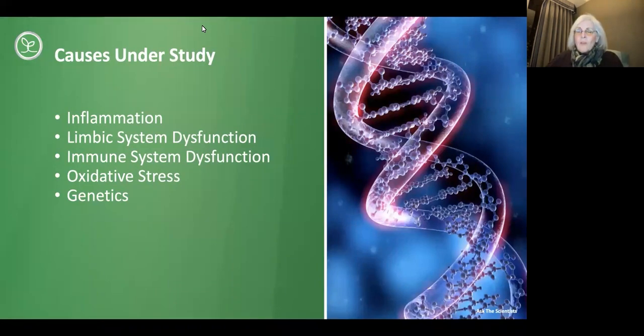There are many causes under study for multiple chemical sensitivity, for this TILT, for this overactive immune response. The first one is inflammation due to that expression of that amplified immune response. Number two, they're looking at limbic system dysfunction. Continued exposure to these toxicants can make the nerve networks in the brain more sensitive to environmental stressors. Number three is immune system dysfunction observed due to exposure to synthetic chemicals.